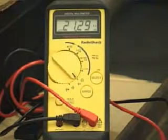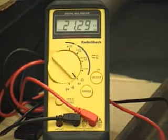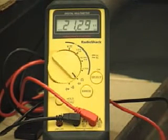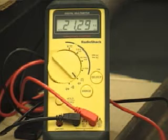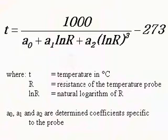After the bath temperature stabilizes, turn on the multimeter and allow the voltage reading to stabilize. Then note the voltage reading in kilo-ohms. The voltage reading is input into this equation to yield the measured temperature reading. The difference between the desired temperature and the measured temperature is called the temperature offset.